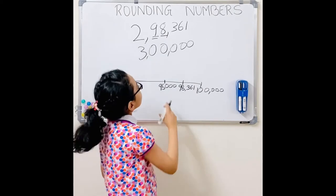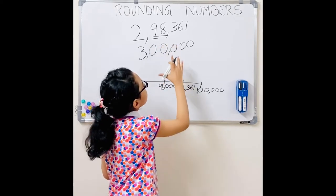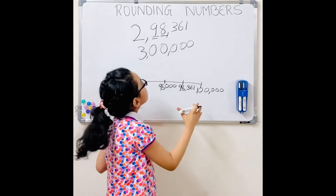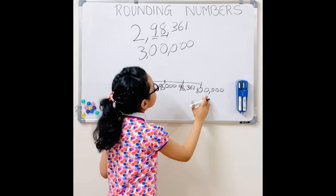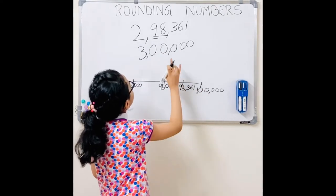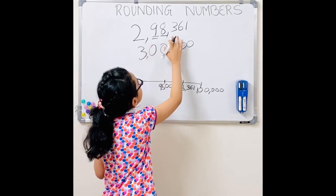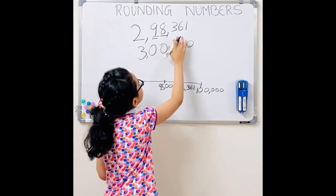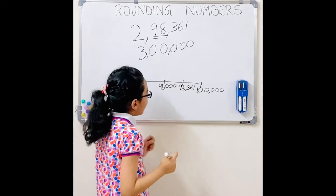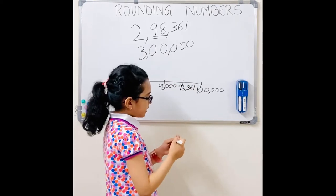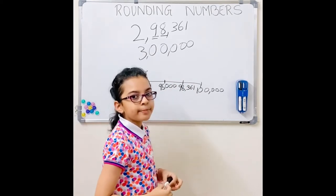When you round to the nearest 10,000, you check the digit in the thousands place. And 8 is more than 5 or 4, so it would round up, right? So we know it would round up to 100,000. So we add that to 298,361 and we get 300,000. Now I'll step aside so you can take a look and I can wipe the board.